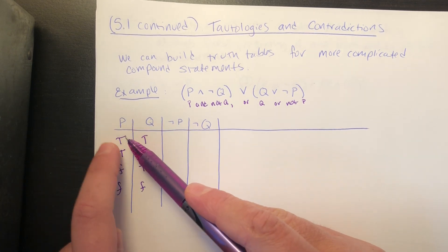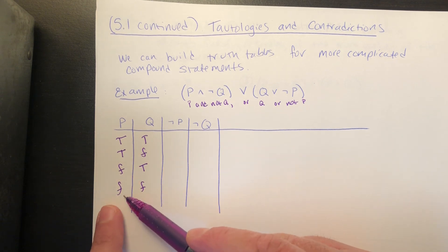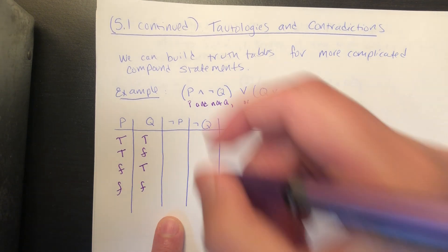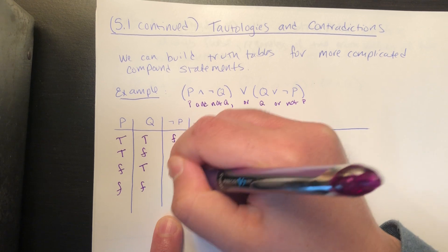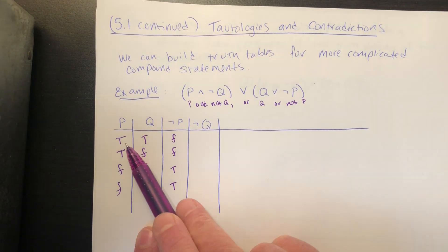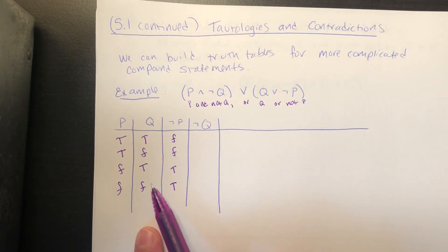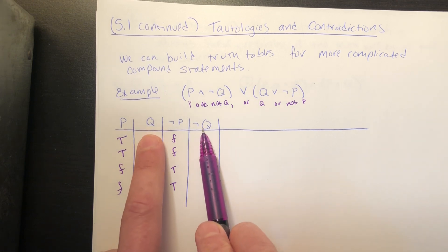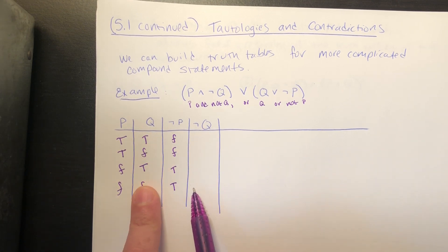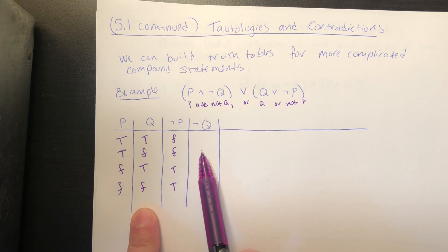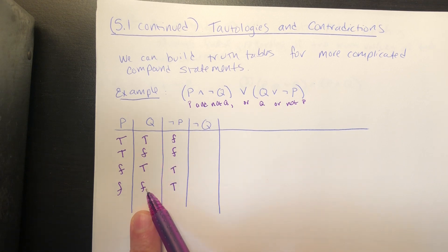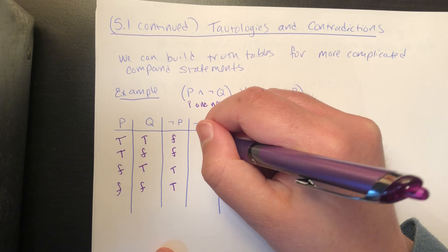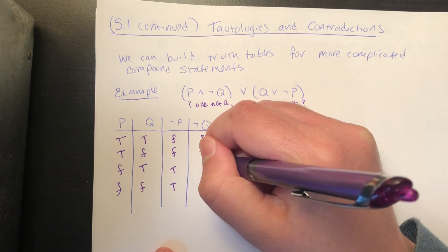My p column has truth values true, true, false, false. So the negation of p has truth values false, false, true, true — I just look at the p column and swap T's to F's and vice versa. Similarly, for the negation of q, I look at the q column and take the opposite truth value. The q column is true, false, true, false, so the negation of q is false, true, false, true.